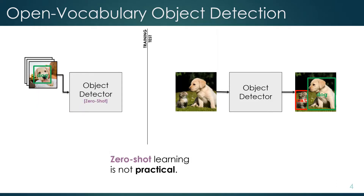There are some recent works that try to solve this problem using zero-shot learning, which basically means training on subcategories like dog and generalizing to unseen categories like cat. However, these methods are not practical yet because their accuracies are still very low.